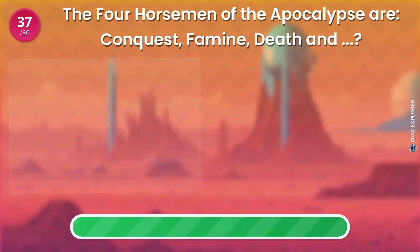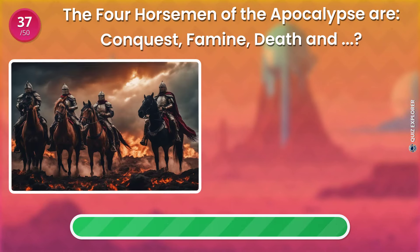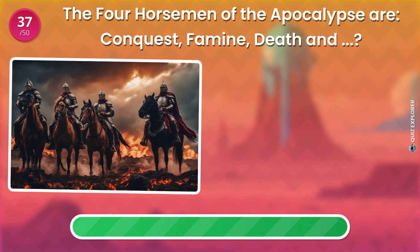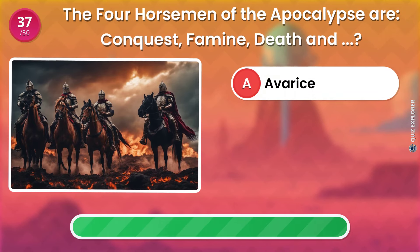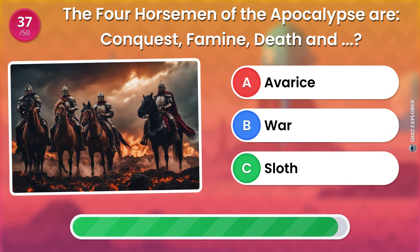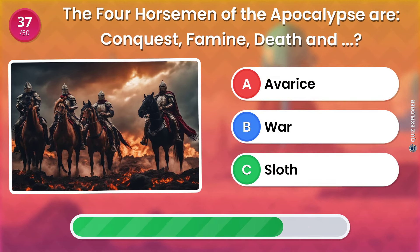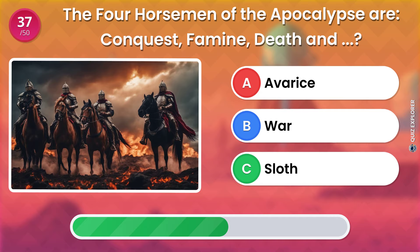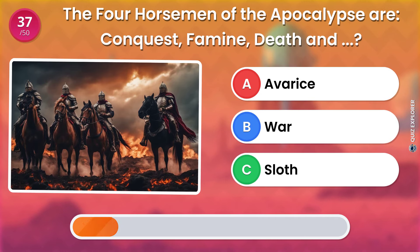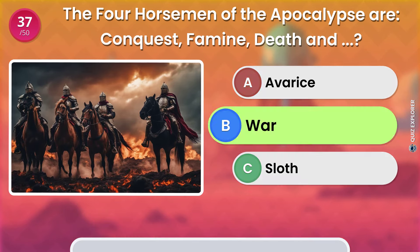The four horsemen of the apocalypse are conquest, famine, death, and... avarice. War. Sloth. The answer is: War.